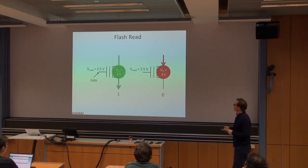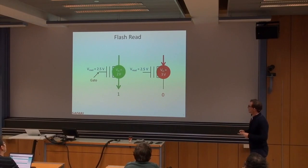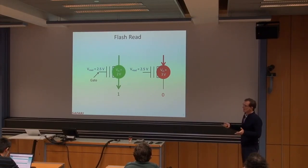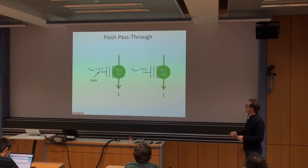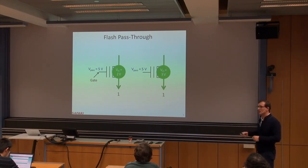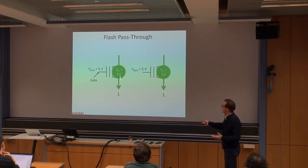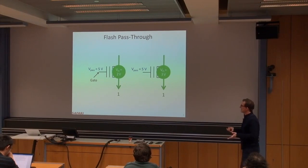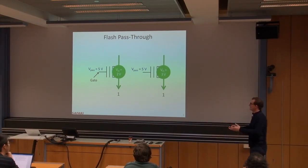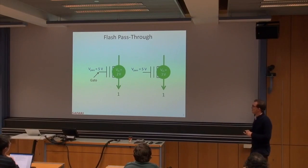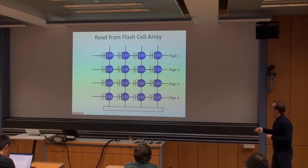For pass-through: if you don't want to read a particular row, you apply a very high voltage — higher than any programmed value — to ensure that cell turns on and passes through whatever is on the bit line. That's the pass-through voltage, and it ensures non-selected rows don't interfere with the reading.